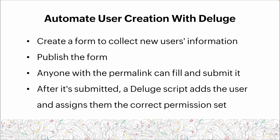The way that we're going to automate user creation is by creating a form to collect the new user's information. We'll then publish that form — anyone who has the link can fill it out and submit it. Once it's submitted, a Deluge script in the background will add that user and assign them the correct permission set based on the information they entered on the registration.